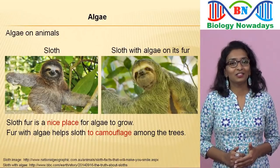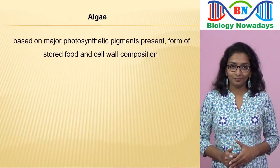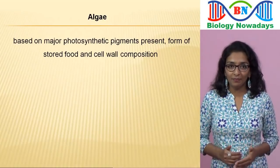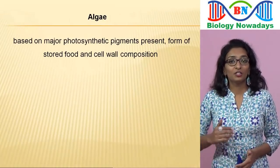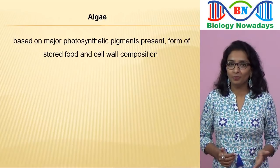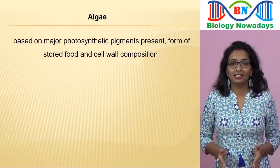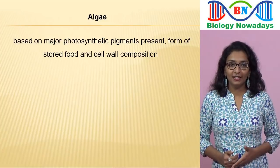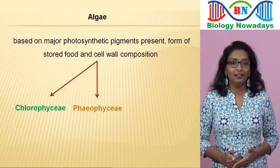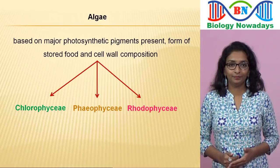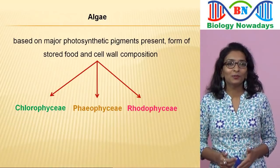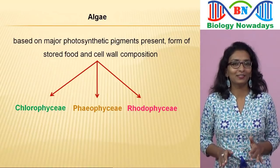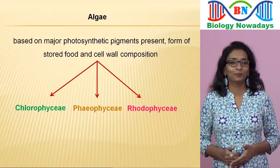Now let's move on to the classification of algae. Based on the major photosynthetic pigments present, form of stored food and cell wall composition, algae are classified into three main classes: Chlorophyceae, Phaeophyceae and Rhodophyceae. There is a reason why the names of different classes are written in different colours — I hope you will find out that reason by the end of this video.